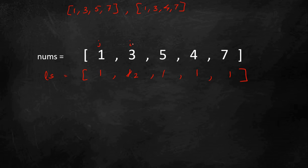We increment i, check again if nums[j] is less than nums[i] — yes — so ls[i] becomes ls[j] plus 1, which is 2. That is, 1 and 5 is length 2. Now we increment j. Again, nums[j] which is 3 is less than nums[i] which is 5, so ls[i] becomes ls[j] plus 1 — that's 2 plus 1 equals 3. So 1, 3, 5 is length 3, which is correct for that index.